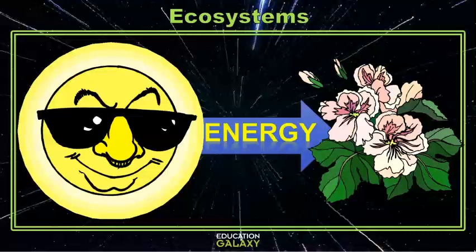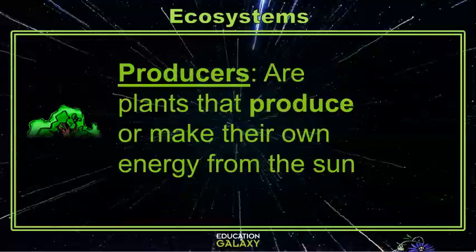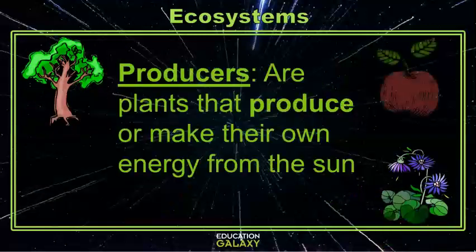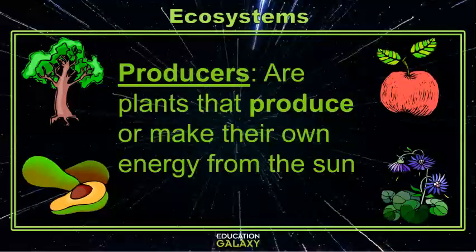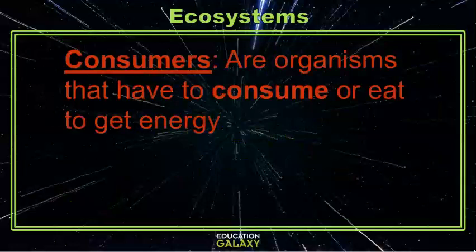The sun's energy is used by plants, or producers, to make and produce their own energy. Plants use a process called photosynthesis to convert sunlight, carbon dioxide, and water into energy. Plants can then be eaten or consumed by consumers.